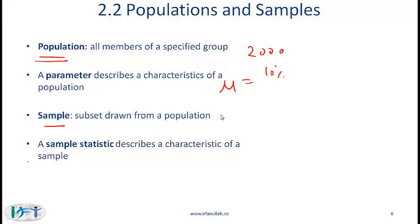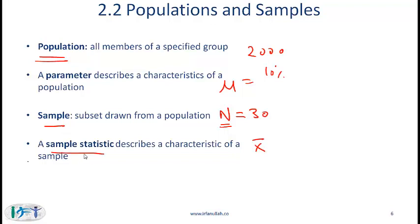A sample is a subset drawn from this population — let's say we draw a sample of size 30, generally denoted by n. A sample statistic describes the characteristic of a sample and is generally denoted by X-bar. X-bar would be the average return of the 30 stocks in the sample, and X-bar is called a sample statistic.